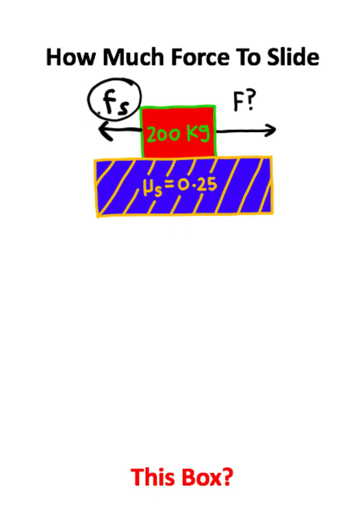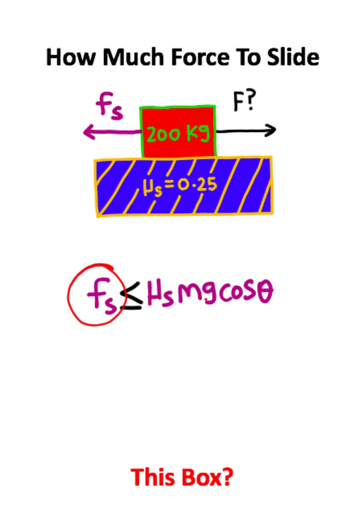Now, the way that you calculate the threshold for static friction is using this equation right here. The threshold for static friction is the coefficient of static friction multiplied by the normal force on the box. We actually derived this in a different video.